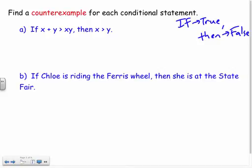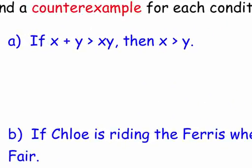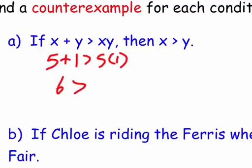I can provide a counterexample to make the then false. That's what a counterexample does. So for this first one, since it's an inequality, I can plug in some numbers to try to make it false here. So let's think about this. If x plus y is greater than xy, let me just try something here. We'll go if 5 and 1 is greater than x times y, because 5 times 1 is 5, right? 5 times 1.